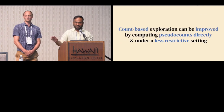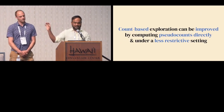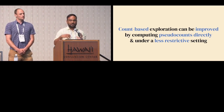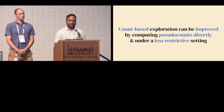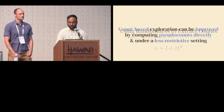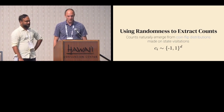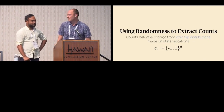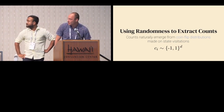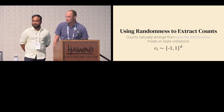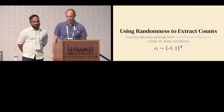Our hypothesis is that we can make count-based exploration a more popular paradigm if we can compute these pseudo counts more directly, without having to go through the proxy of density modeling. We set up a simple regression problem that, when solved, will produce these 1 over square root of n bonuses that we're looking for.